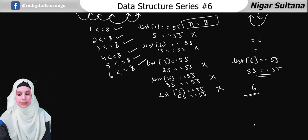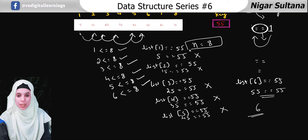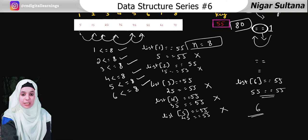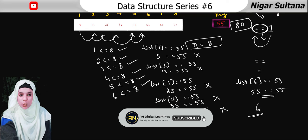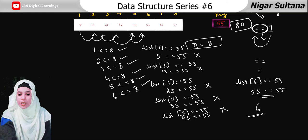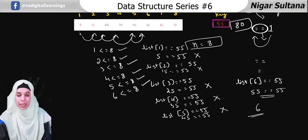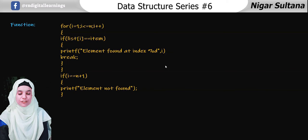Now let's take another example with key 80. We compare 80 with the first element — not equal. Increment. Is 15 equals to 80? Not equal. Is 25 equals to 80? Not equal. Is 35 equals to 80? Not equal. Is 45 equals to 80? Not equal. Is 55 equals to 80? Not equal. Is 65 equals to 80? Not equal. Is 75 equals to 80? Not equal. Item not found — we get the message 'key is not found.'